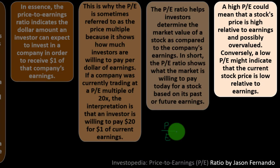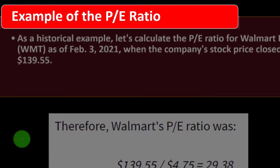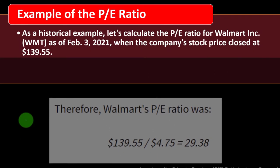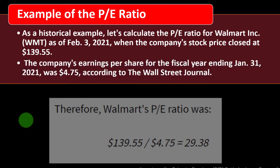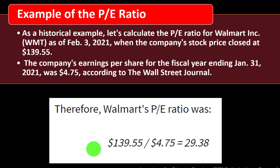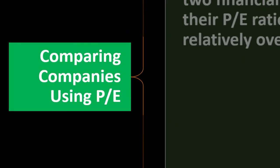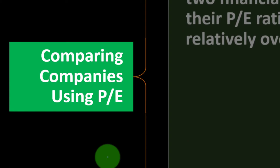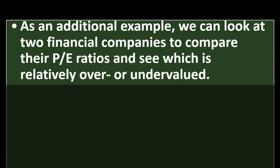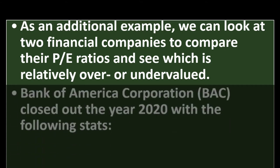Conversely, a low PE might indicate that the current stock price is low relative to earnings. As a historical example, let's calculate the PE ratio for Walmart (WMT) as of February 3rd, 2021, when the company's stock price closed at $139.55. The company's earnings per share for the fiscal year ending January 31st, 2021 was $4.75, according to the Wall Street Journal. Therefore, the PE ratio is $139.55 divided by $4.75, which gives us 29.38.